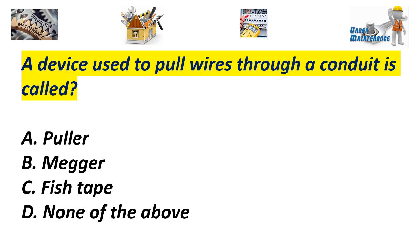A device used to pull wires through a conduit is called A. Puller. B. Megger. C. Fish tape. D. None of the above. Answer C. Fish tape.